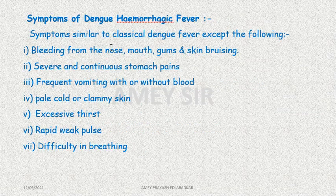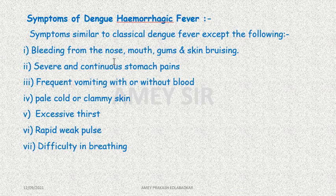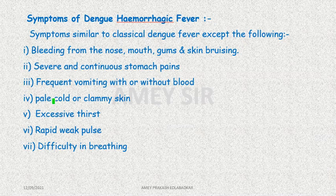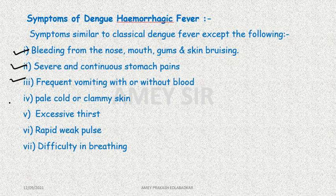When hemorrhagic fever is present, what will we find? Bleeding from the nose, mouth, gums, and skin bruising. Severe continuous stomach pain. Frequent vomiting with or without blood. Pale, cold, and clammy skin.